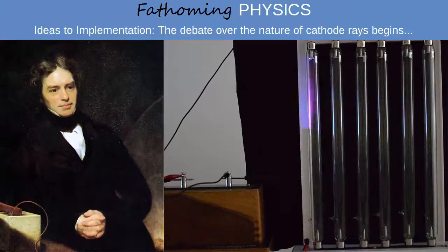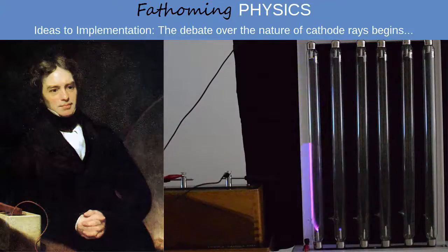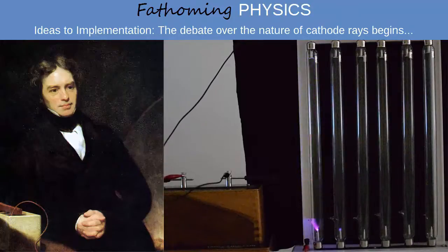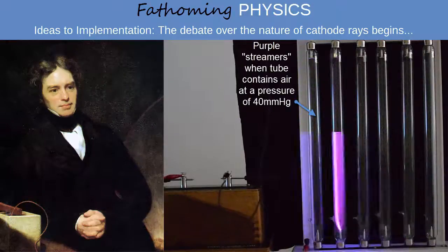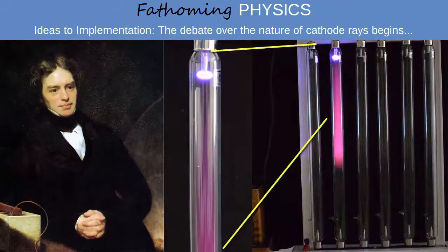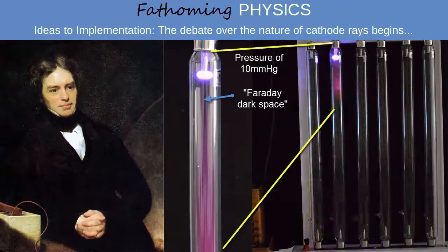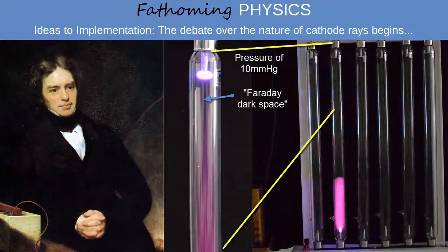In the 1830s, work on electrical discharges in gases was performed by Michael Faraday. Faraday observed that as the gas pressure in a glass tube with electrodes was reduced, the pattern of electrical discharge changed from streamers flowing between the electrodes to a steady glow, with a dark space, now known as the Faraday dark space, separating the cathode from the rest of the discharge.